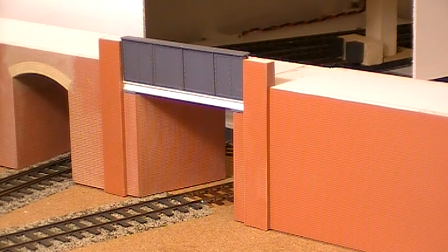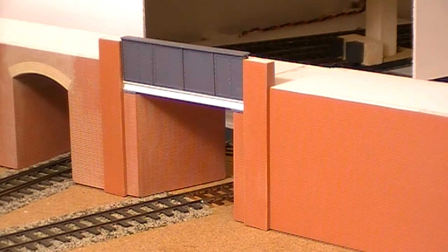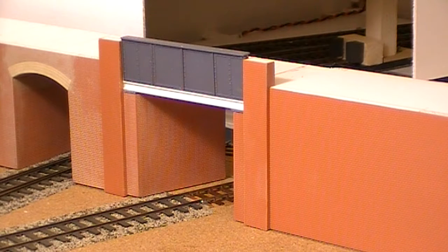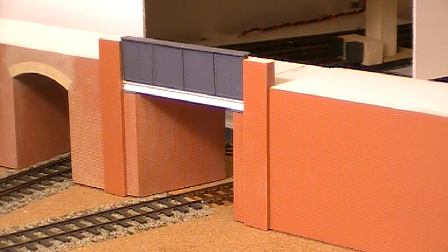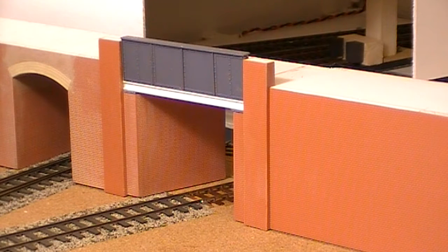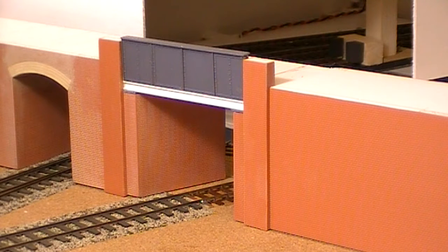Hello everyone and welcome back to what has turned out to be part two of the viaduct build on canal sidings. As you can see, I've now built two of the buttresses that go either side of the bridges and I've set the correct position for the girder on this bridge.